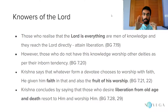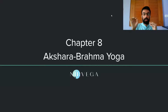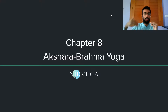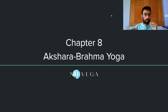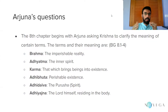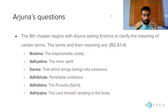With that, we conclude chapter 7 and move on to chapter 8, which is called Akshara Brahma Yoga. This chapter is also called Dharana Yoga — Adi Shankara calls it Dharana Yoga because it largely deals with how one can think of the Lord, how one can think of Brahman during the final moments of their life. Chapter 8 begins with Arjuna questioning Krishna and asking him to clarify the meaning of certain terms which Krishna had employed during the end of the 7th chapter.